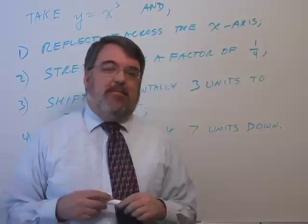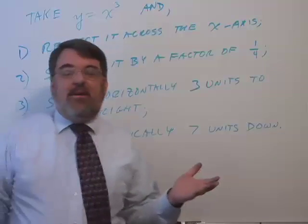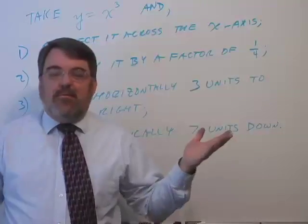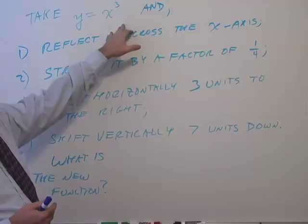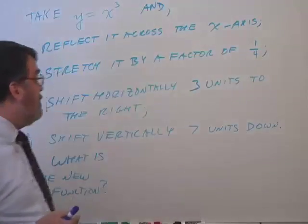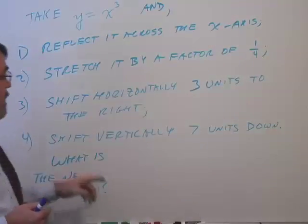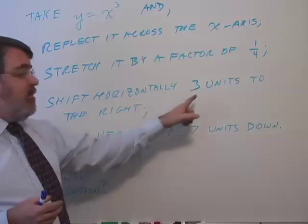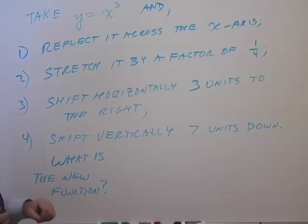Here's our third type of transformation problem. And for change of pace, I got rid of that absolute value and we'll use a different function here. So take y equals x cubed, x to the third power, and reflect it across the x-axis. Stretch it by a factor of one-fourth. Shift horizontally three units to the right and shift vertically seven units down. What is the new function?